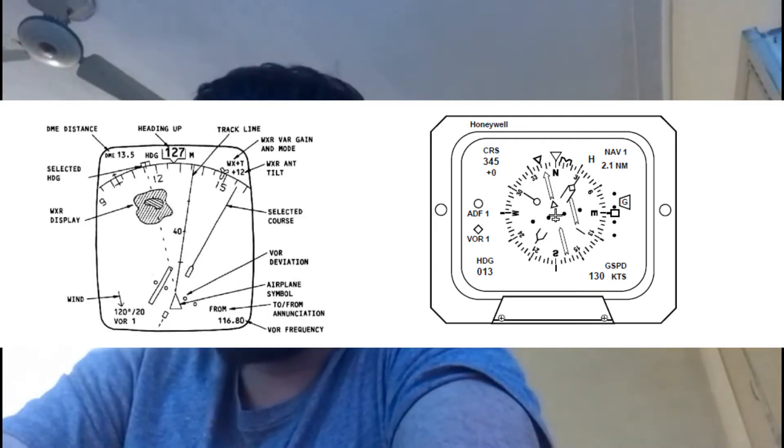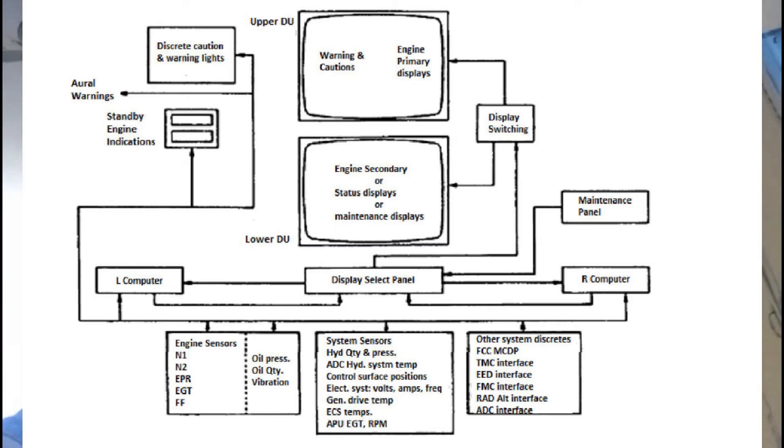EICAS - Engine Indicating and Crew Alerting System. The basic system comprises two display units, a control panel, and two computers supplied with analog and digital signals from engine and system sensors operating in conjunction with the engines.